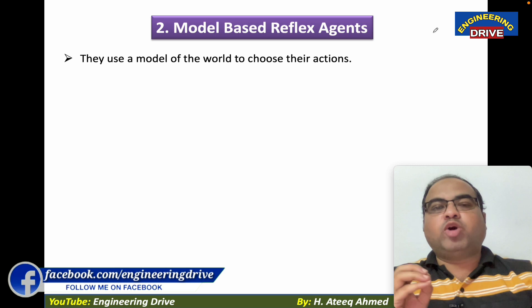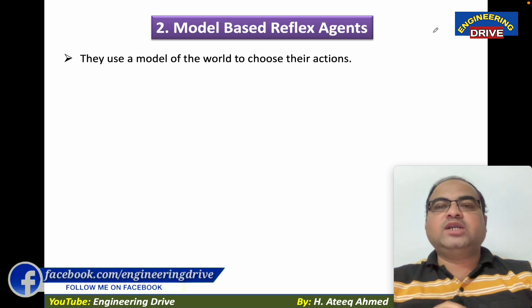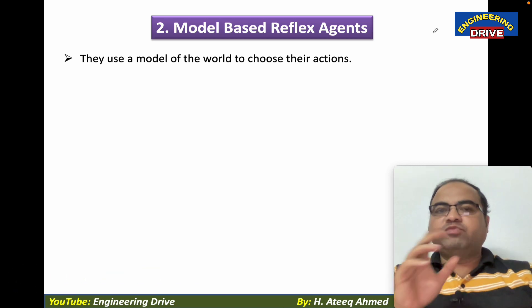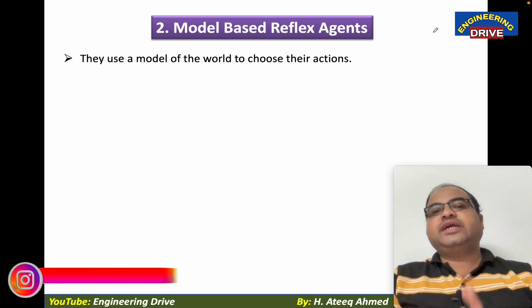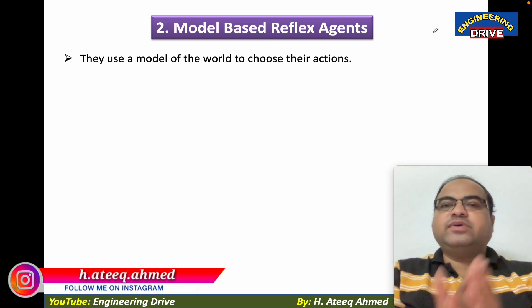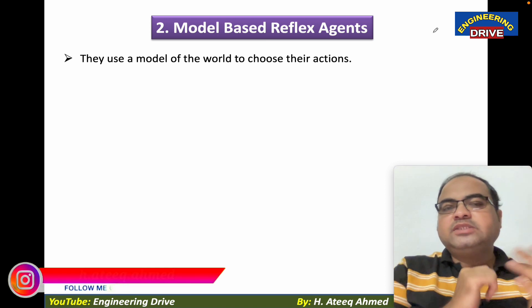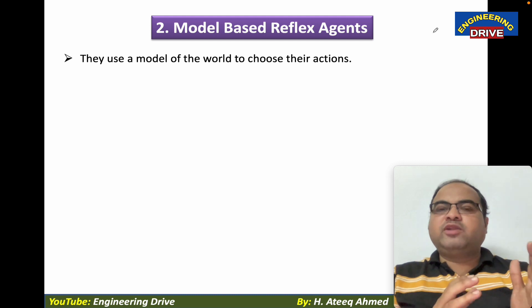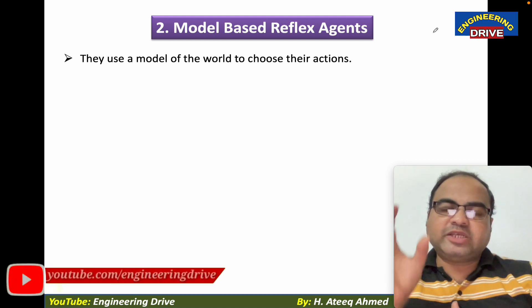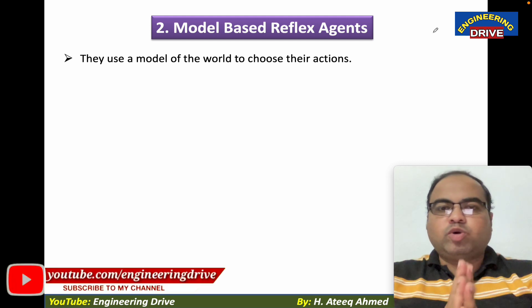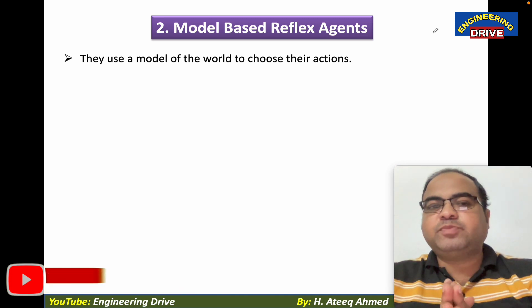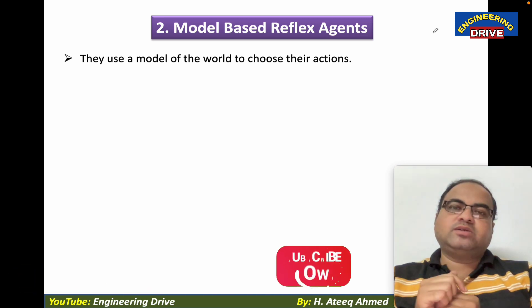Model-based reflex agents use a model of the world to choose their actions. This is the point which differentiates these agents from simple reflex agents. Simple reflex agents choose actions based on the current percept, whereas model-based agents choose their actions based on a model of the world.